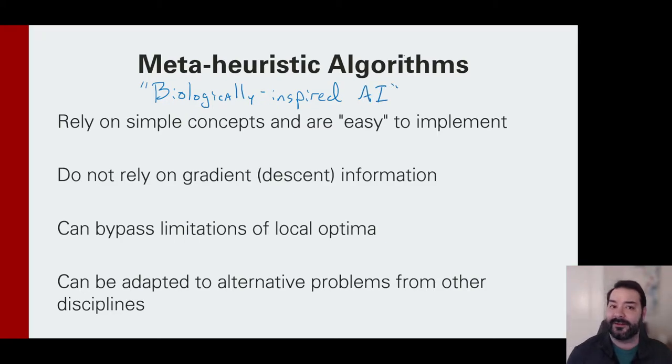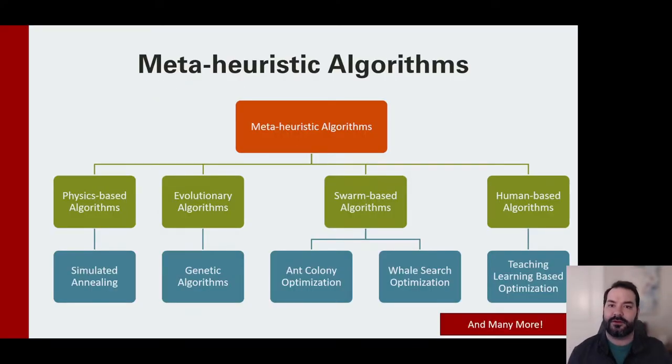The entire idea here is looking at something that we see out there in the world as a natural occurrence and saying, hey, that might work. Meta-heuristics is just this umbrella term to talk about all those things that we see out in nature. And for this first video, I'm going to focus on this idea of simulated annealing.